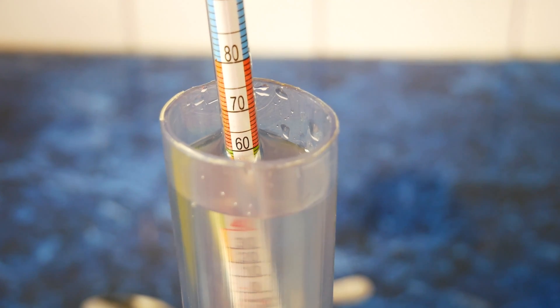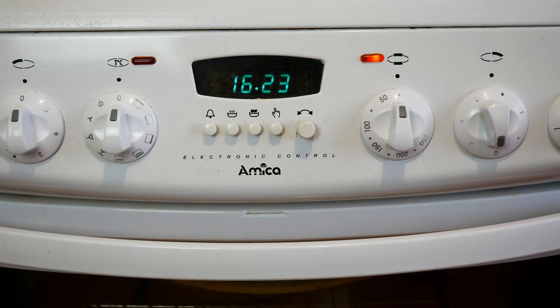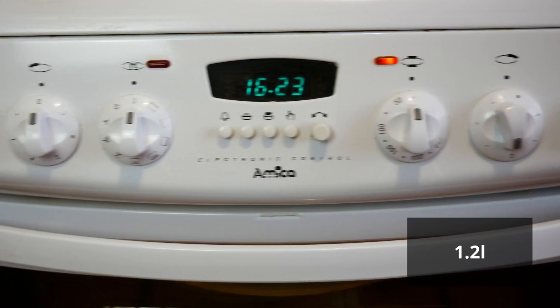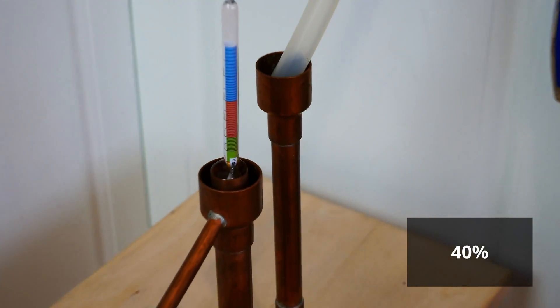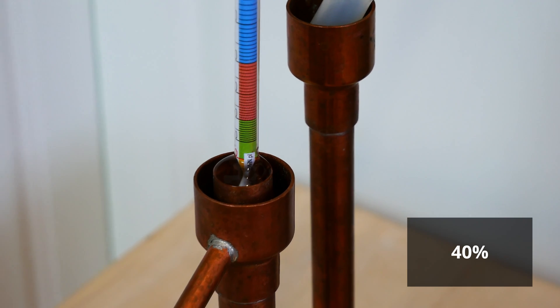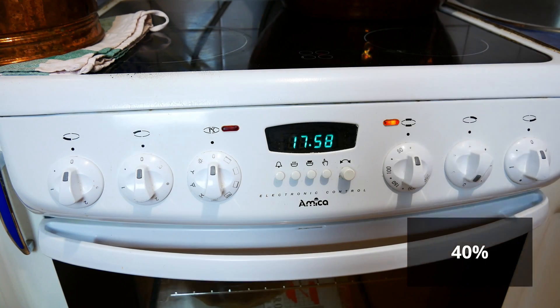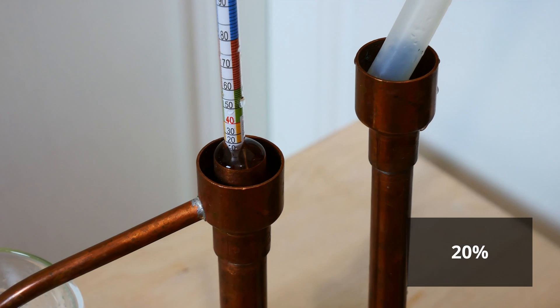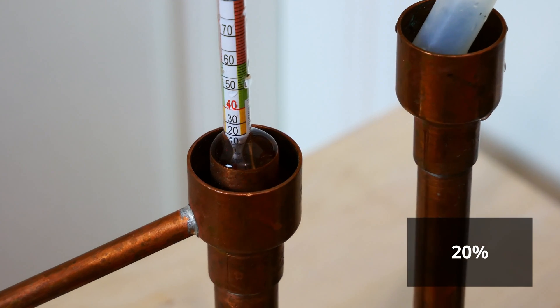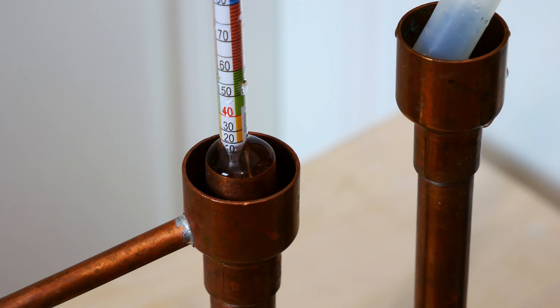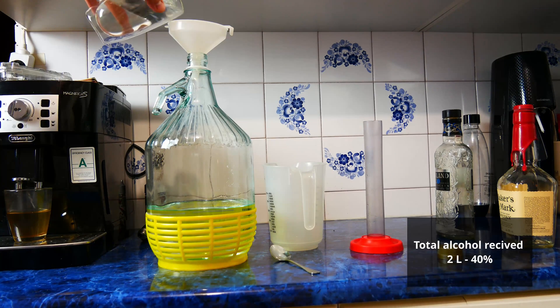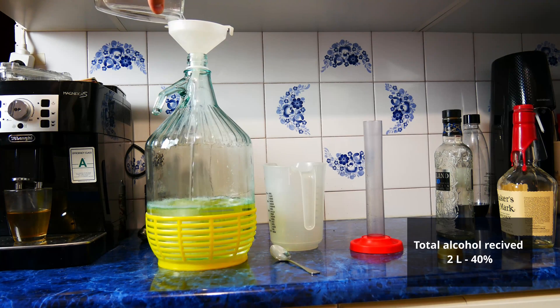After 2 and a half hours from the beginning of the distillation we collect about 1.25 quarts of alcohol. The strength of alcohol receiving is currently 80 proof. You can continue picking up to 0 but I usually stop at 40 proof. We received a total of about 2 quarts of 80 proof alcohol.